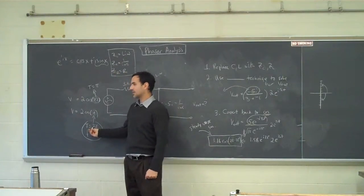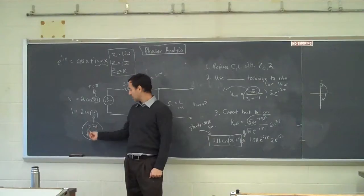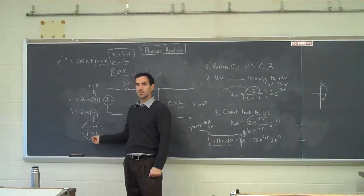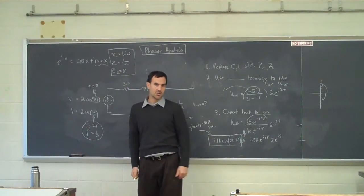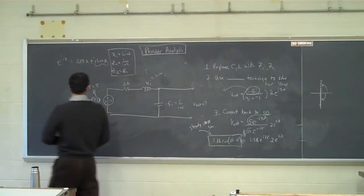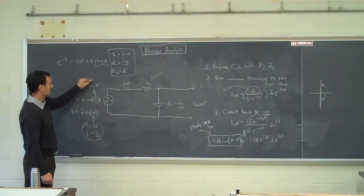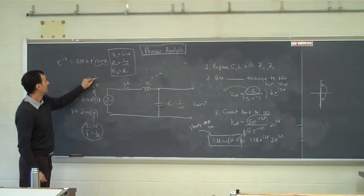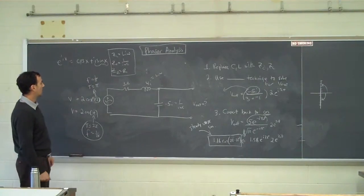So I'll say that again. Period is how many seconds per cycle. Frequency is how many cycles per second. They are exactly inverses of each other. How about up here? What's the frequency? 1 over pi. Okay.